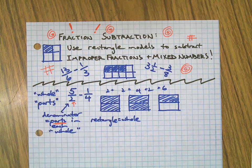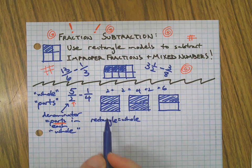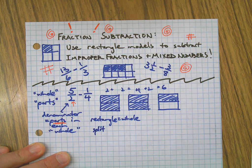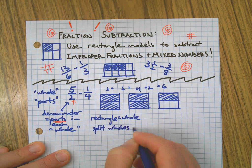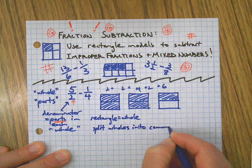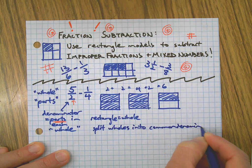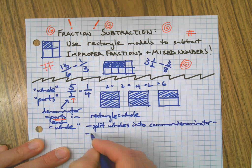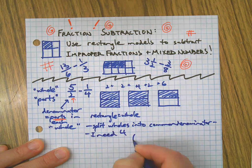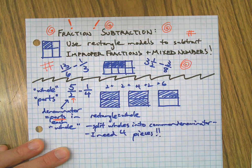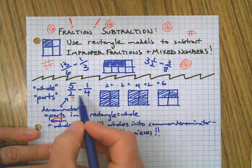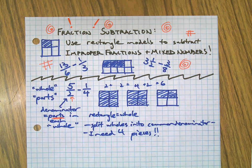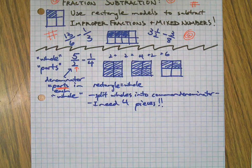Next I need to take one-fourth out of this. Step one: split each whole into the common denominator — this is finding the common denominator using rectangle models without much calculating. Right now I only have two pieces in each whole, so I'm going to cut them into fourths so I can take fourths out.